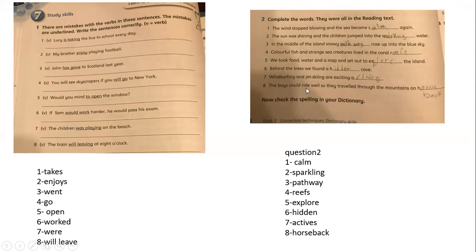Now the second question. Here we are going to complete the word from the text. Here: the wind stopped blowing and the sea became calm again. The sun was shining and the children jumped into the sparkling water. In the middle of the island, a snowy pathway rose up into a sky blue sky.